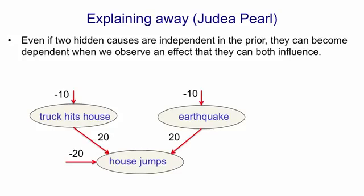But if one of those causes has happened, the 20 cancels the minus 20, and now the house will jump with a probability of a half. Each of the causes is itself rather unlikely, but not nearly as unlikely as a house spontaneously jumping. So if you see the house jump, one plausible explanation is that a truck hit the house. A different plausible explanation is that it was an earthquake. And each of those has a probability of about e to the minus 10, whereas the house jumping spontaneously has a probability of about e to the minus 20.